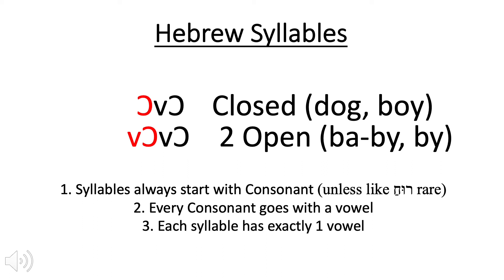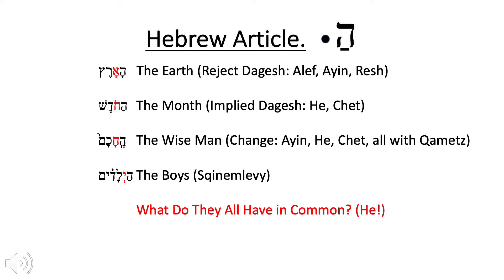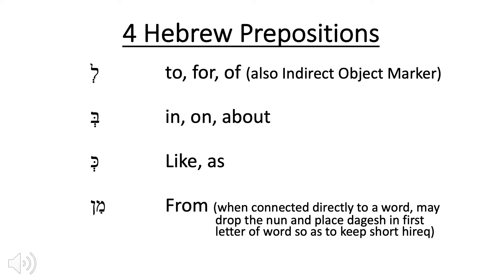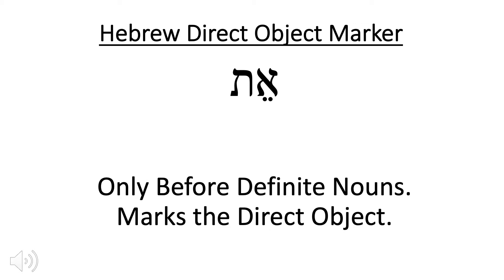Two kinds of Hebrew syllables: closed and open. There is only one vowel per syllable, so the second consonant of a closed syllable will have a silent shva. The Hebrew definite article is he plus a patach plus a dagesh. The Hebrew conjunction is vav, with the most important vav being the vav consecutive — vav plus a patach plus a dagesh in the first root letter of the verb — that is often found in narrative. Here are a few Hebrew prepositions, keeping in mind that if there is a definite article, it will drop and the preposition will take the vowel of the definite article.